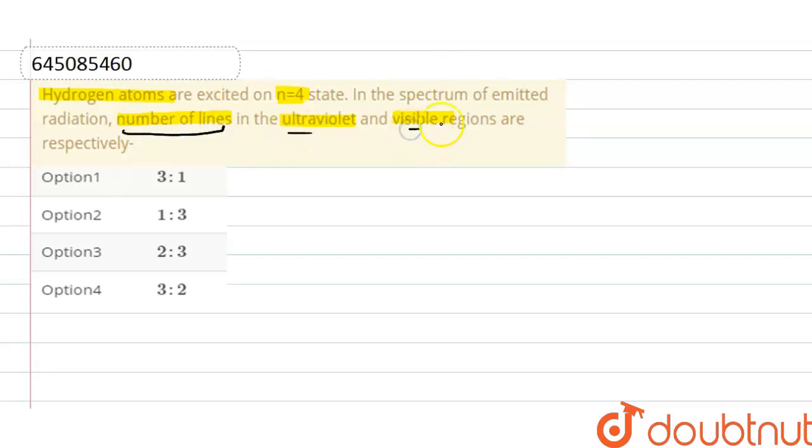ultraviolet and visible regions. The formula to calculate the number of spectral lines that fall in a particular region is n₂ minus r, where n₂ is the excited state and r is the region in which the spectral line falls.